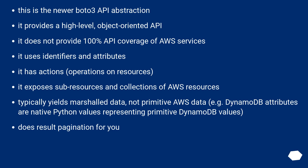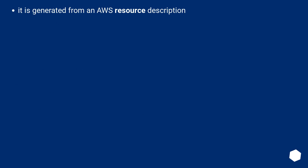Resource. This is the newer Boto3 API abstraction. It provides a high-level, object-oriented API. It does not provide 100% API coverage of AWS services. It uses identifiers and attributes. It has actions — operations on resources. It exposes sub-resources and collections of AWS resources. It typically yields marshaled data, not primitive AWS data — for example, DynamoDB attributes are native Python values representing primitive DynamoDB values. It does result pagination for you automatically. It is generated from an AWS resource description.